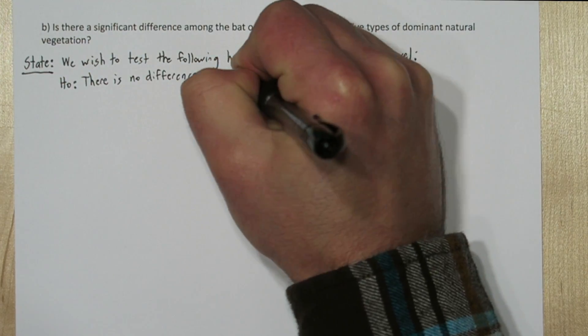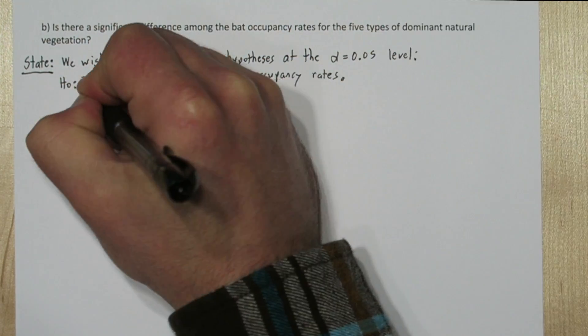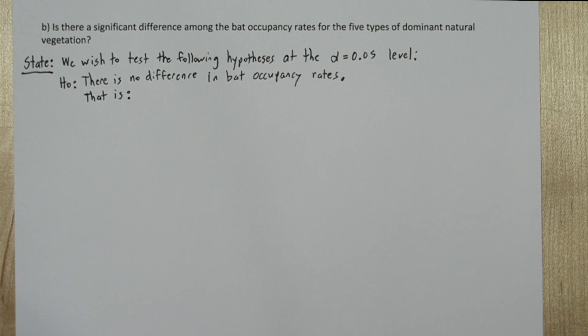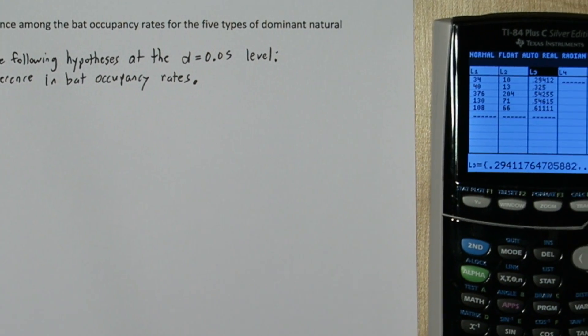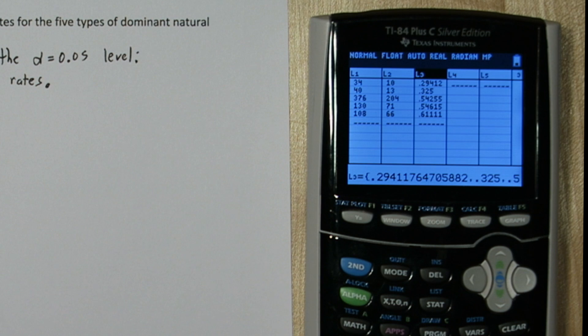Our null hypothesis is going to be there's no difference in bat occupancy rates. If we go back to our list and look at the total number of bat houses and the total number that were occupied, we can get the average occupancy rate. Here's how we're going to do that.